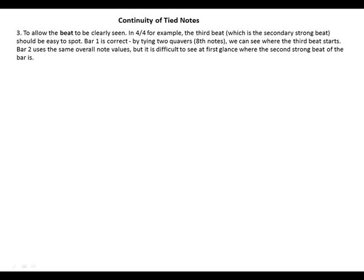The third one is to allow the beat to be clearly seen. Like in 4/4, the third beat, which is the secondary strong beat, should be easy to spot. Bar 1 is correct. By tying two quaver notes, we can see where that beat starts. But bar 2 uses the same overall note values, but it's difficult to see at first glance where the second strong beat of the bar is.